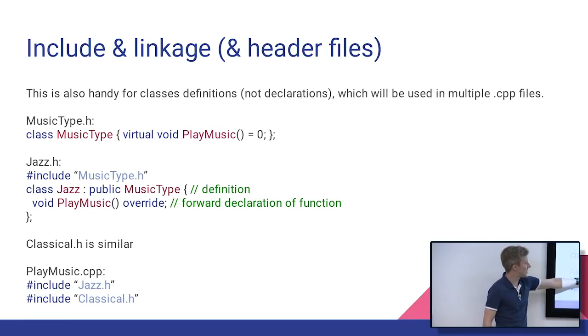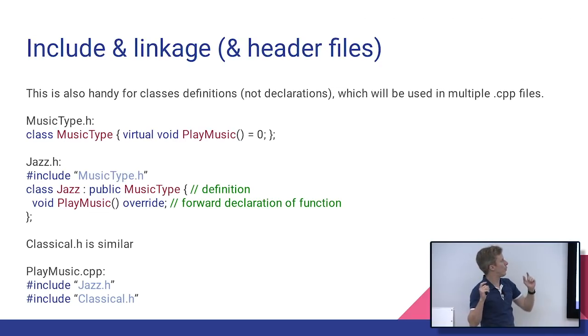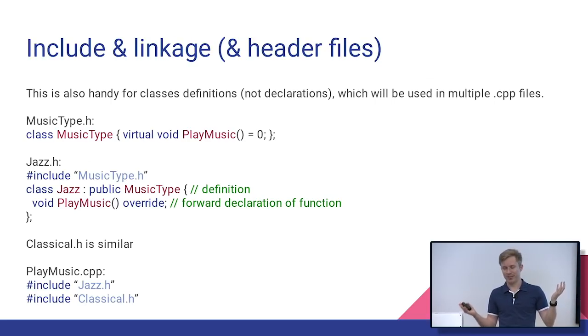And then I have playmusic.cpp. If that includes both jazz and classical, we kind of created a diamond where we've included this musictype.h twice in this file. And then that means this class has been defined twice. So the compiler will yell at us and say, whoa, whoa, whoa. You're not allowed to redefine classes, even if they're the exact same. I don't know if they're the same yet. All right, so it'll yell at us.